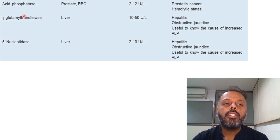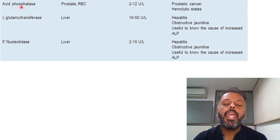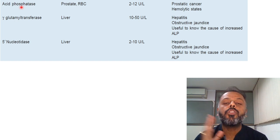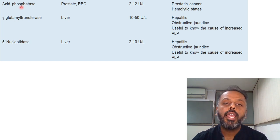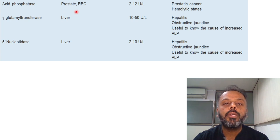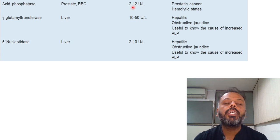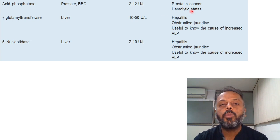The next enzyme is Acid Phosphatase. It hydrolyzes phosphoric acid esters at acidic pH of 2 to 4. Sources are the prostate and RBCs. The normal level is 2 to 12 units per litre. Its level gets elevated in prostate cancer and hemolytic states.